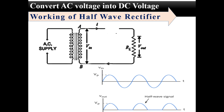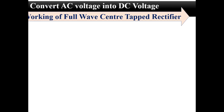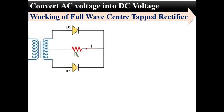Now let's see the working of the second rectifier, that is the full wave center tap rectifier. This is the circuit diagram for the full wave center tap rectifier. It uses a center tap transformer, hence it is called a full wave center tap rectifier. As shown in this figure, the secondary of the transformer has three terminals — the middle terminal is always zero, while the other two terminals have alternating values, either positive or negative.